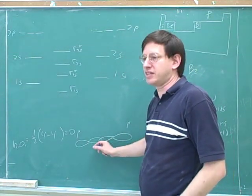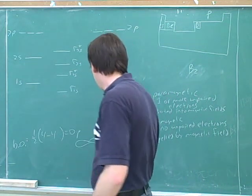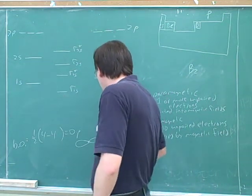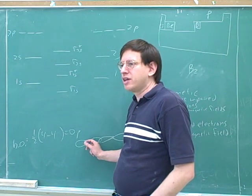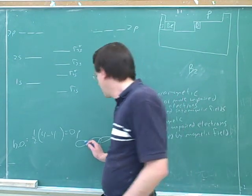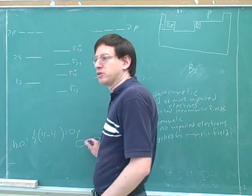We know this is sigma because it's a head-to-head overlap. Here's one of the atoms, and here's the other atom. Now, let's say I was going to draw another p orbital on this atom. How should I draw the other p orbital? It would have to be perpendicular to the first p orbital.